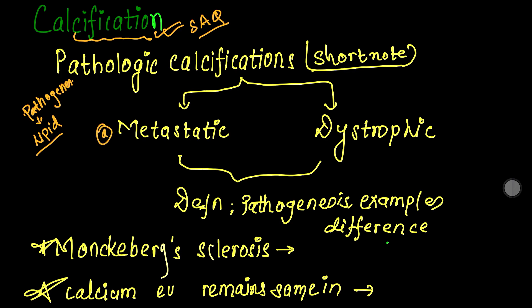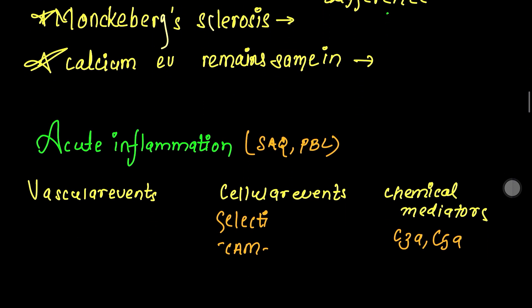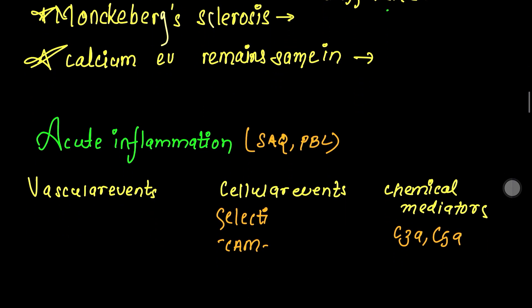The types are metastatic calcification and dystrophic calcification. You need to understand the foundation and details of pathologic calcification, including where each type occurs and the conditions associated with them.